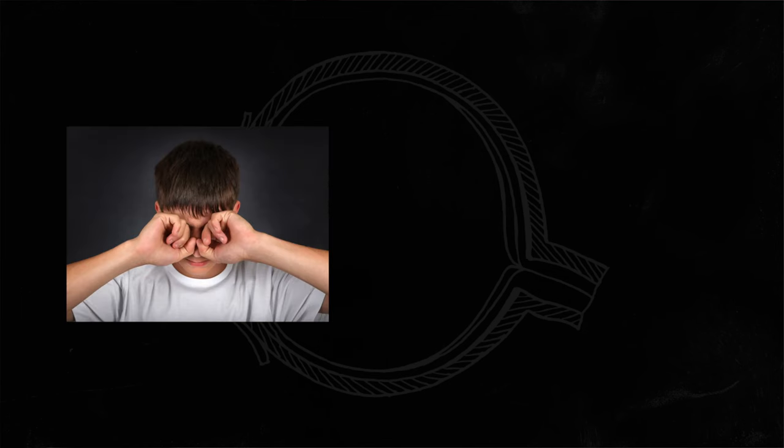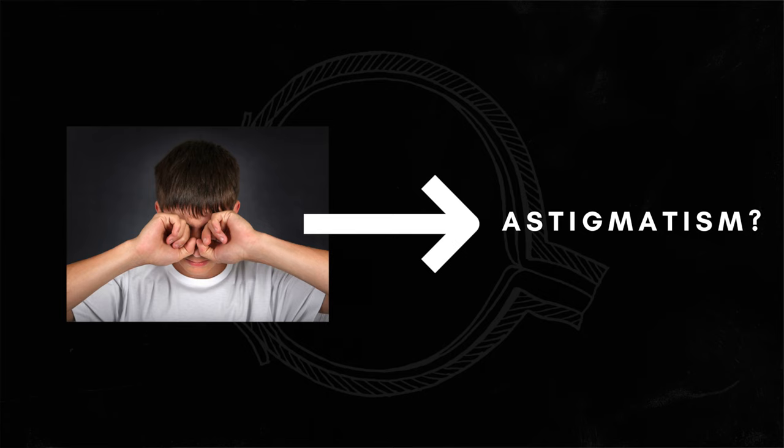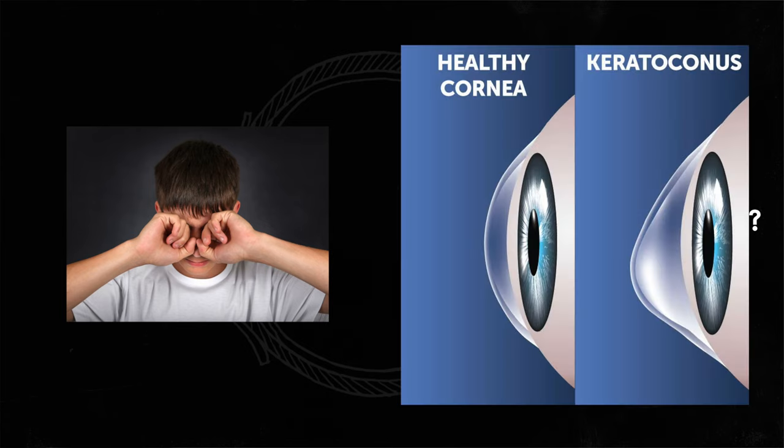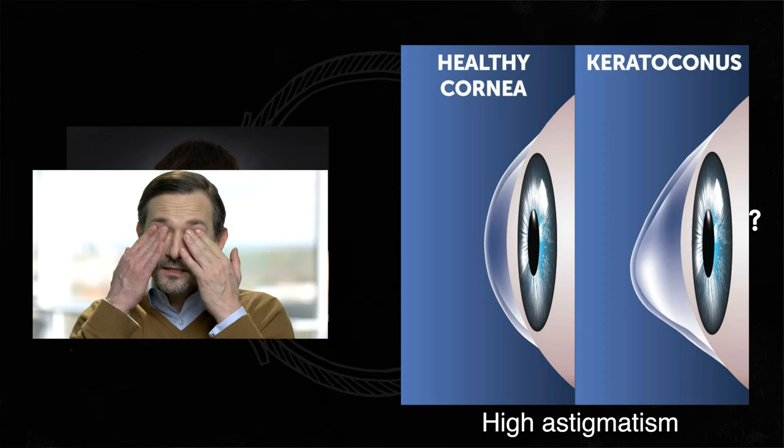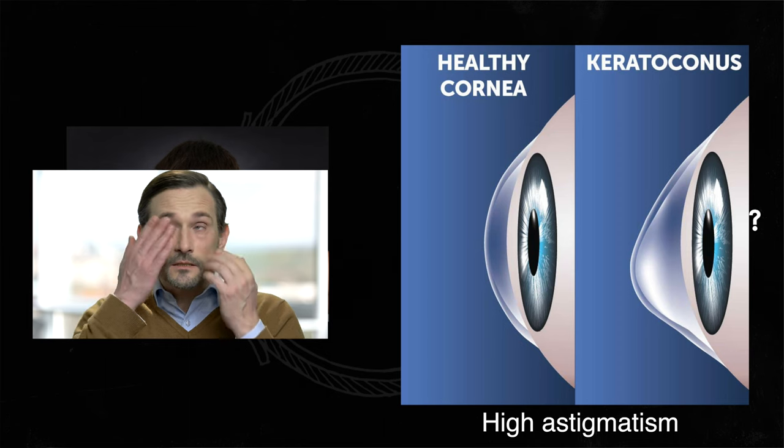Laser eye surgeons can reshape the cornea in the form of refractive laser surgery to create an optimal shape for the light to be bent, producing clearer vision. Although there isn't enough evidence to suggest that eye rubbing directly induces astigmatism, it is a well known fact that individuals with keratoconus, which is high astigmatism, are more likely to rub their eyes excessively as their astigmatism worsens.